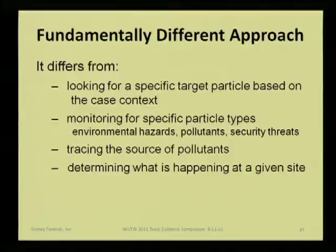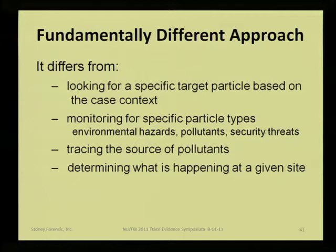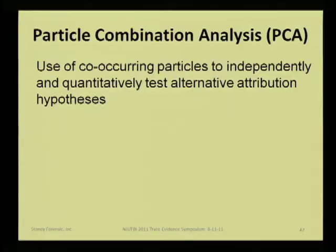It's different from looking for specific target particles based on case context regardless of size, like GSR. It's different from monitoring for specific particle types in environmental hazards, pollutants, or security threats. It's different from tracing a source of pollutants or determining what's happening at a given site. So what is it? I thought I'd name it: Particle Combination Analysis, or PCA. We want to use co-occurring particles to independently and quantitatively test alternative attribution hypotheses.